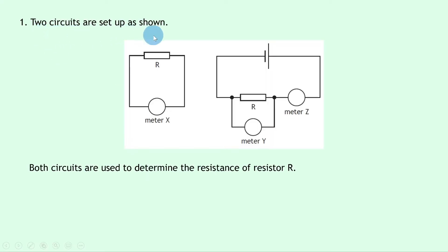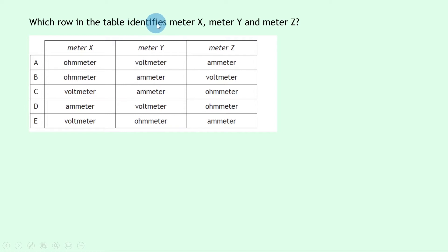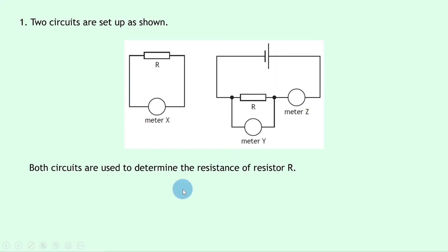Question 1 says that two circuits are set up as shown. We've got meter X connected in series with resistor R, and a circuit with a battery, resistor R with meter Y in parallel with it and meter Z in series. Both circuits are used to determine the resistance of resistor R. In order to find the resistance of a resistor purely with one device, it's going to be the ohmmeter because that measures the resistance of a component. So meter X has got to be the ohmmeter.